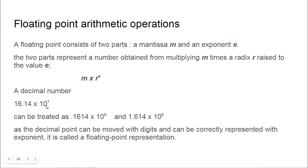Let us take an example: 16.14 × 10^7. When you move the decimal point towards the left, you have to increase the exponent. However many places you move the point, that much value you have to add to the exponent. So if we move one point it becomes 10^8, and if we move two points towards left it becomes 10^9.